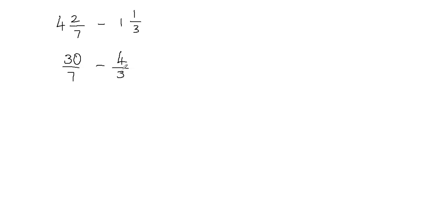Now you can see that I have different denominators. I cannot add or subtract fractions unless I have the same denominator. So my denominators are not equal, so I'm going to make them equal first. To do that, we're going to find the least common denominator, or least common multiple.